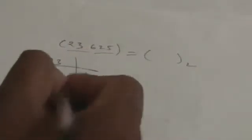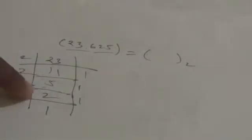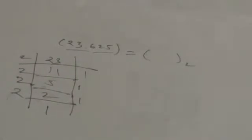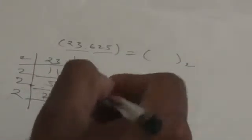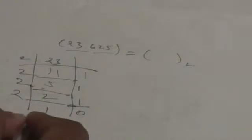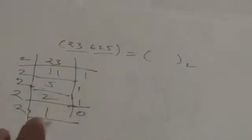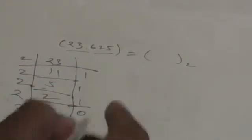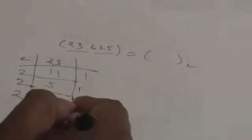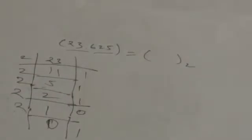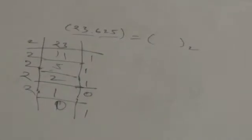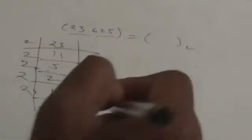Again when I divide quotient 2 by 2, I get 1 as quotient and remainder 0. Now when I divide this quotient by 2 again, I get 0 as quotient and remainder 1. Now I have to accumulate these remainders from bottom to top.